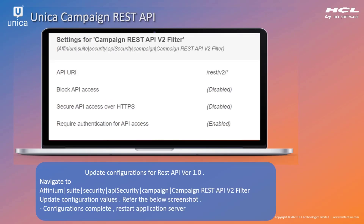For the next configuration, you need to click on the Campaign node. You can see the REST API configuration specific to the API calls. Put the values as shown on the screen. If you want to change the configuration for v1, there will be another node called Campaign REST API Filter. So these are the configurations — very simple to follow.